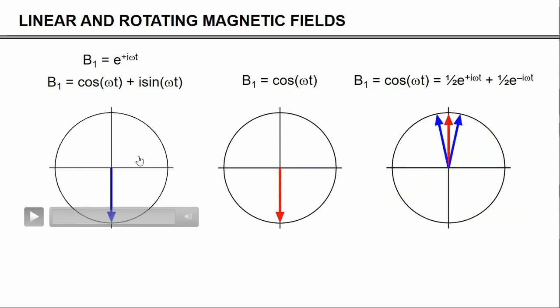The clockwise blue vector is the one that we want. That's the same as in this first picture. The anticlockwise rotating component is extremely far off resonant and doesn't really affect our nuclear spins, and we can basically ignore that. So, you can see that a cosine modulated frequency does equal a rotating B1 field.